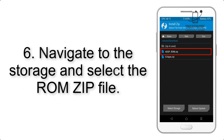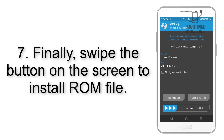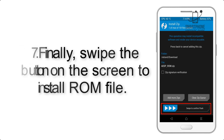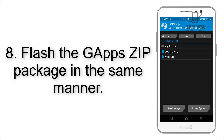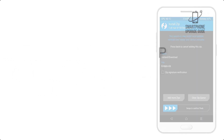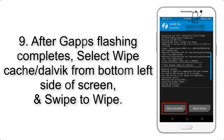Step 5: Go back to the recovery main screen and tap on the Install button. Step 6: Navigate to the storage and select the ROM zip file. Step 7: Swipe the button on the screen to install the ROM file.